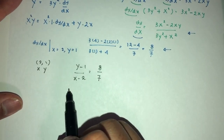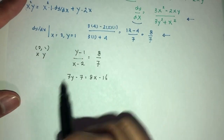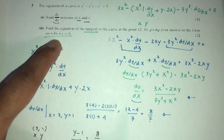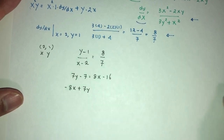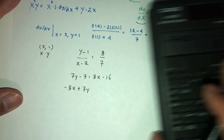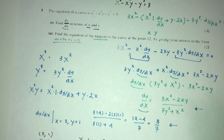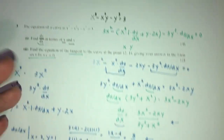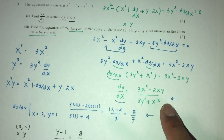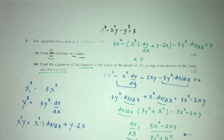Cross multiplying with point (2, 1): y minus 1 over x minus 2 equals 8/7 gives 7y minus 7 equals 8x minus 16. Rearranging into the required form: minus 8x plus 7y plus 9 equals 0. The hardest part was the implicit differentiation — being careful of the minus signs. That is question number 3.